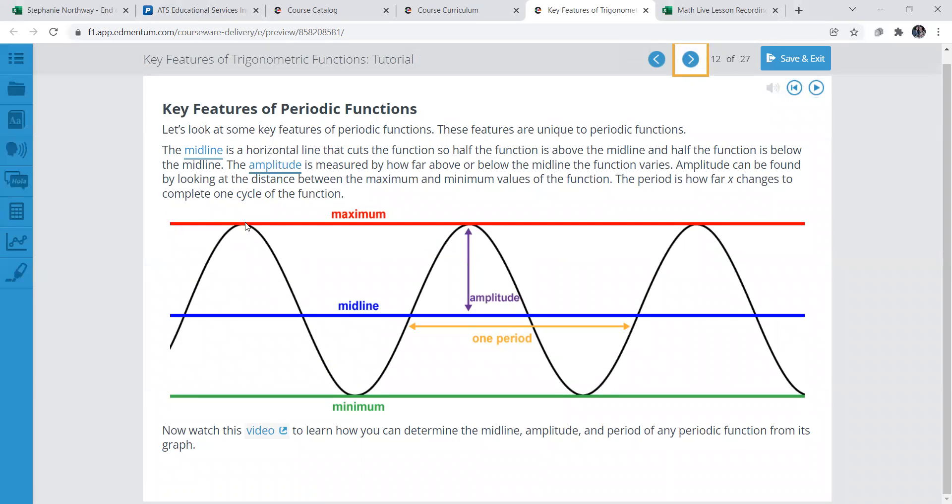This gives you the type of the wave. The maximum is always the highest point, midline is in the middle, and then amplitude is from the midline to the maximum right here, like just that purple line. One period is in between one wave, and then minimum is the lowest point on the wave.